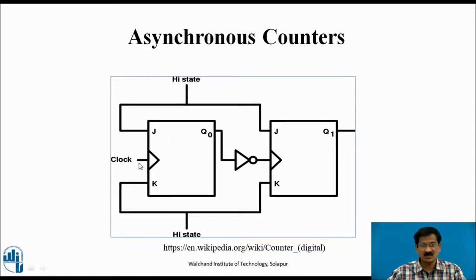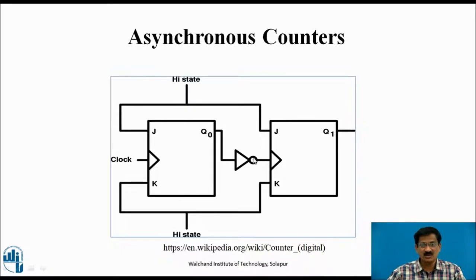Initially Q0 and Q1 are reset to 0. At the arrival of the first clock pulse, Q0 toggles from 0 to 1; Q1 remains 0, so the count is 0,1. This is a positive edge triggered flip-flop, so the inverted output (0) keeps Q1 inactive. At the second clock pulse, Q0 toggles from 1 to 0; this active transition makes Q1 toggle to 1, so the count is 1,0.